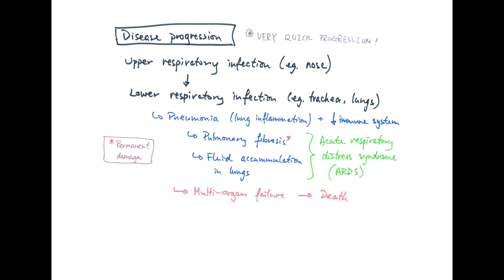Pneumonia can then lead to pulmonary fibrosis, where your lung tissues get replaced with scar tissues. This is permanent and irreversible, just like how surgical scars take nearly a lifetime to heal, or simply it never does.